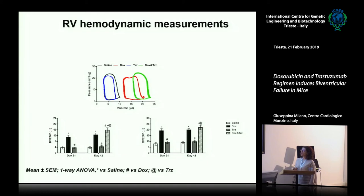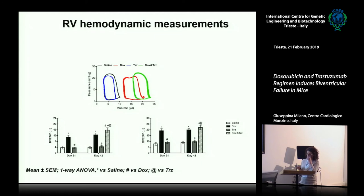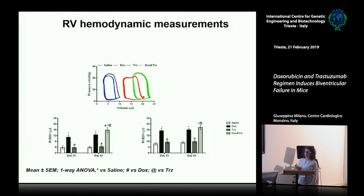These results were confirmed by right ventricle hemodynamic measurement. The pressure-volume loops showed a shift to the right for the Doxorubicine-Trastuzumab treatment group, and this shift was more pronounced in the combination treatment, demonstrating dilated right ventricle dysfunction.